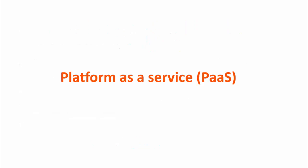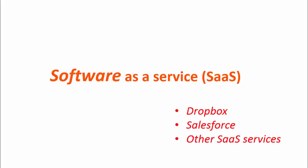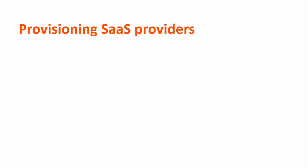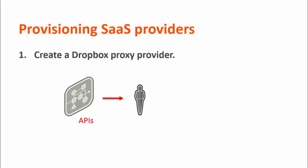This video has discussed PaaS, but note that BMC Cloud Lifecycle Management also lets you provision Software as a Service, or SaaS, such as Dropbox, Salesforce, and other SaaS services. The steps are pretty simple. For example, for Dropbox, you would create a Dropbox proxy provider that implements a few APIs based on the design of the service. The APIs might add new users and send a welcome email.